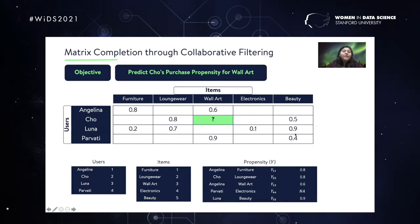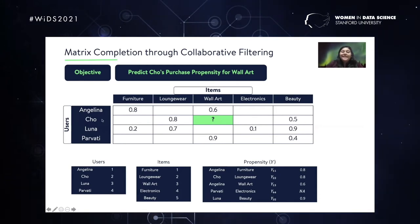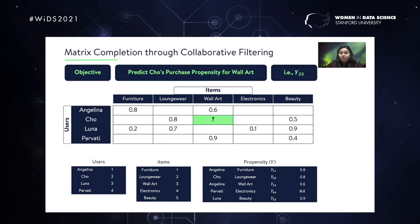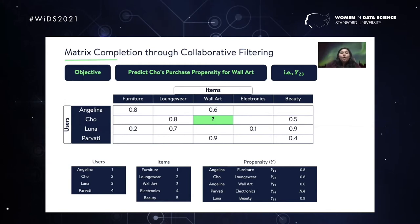We are trying to predict the propensity of the second user, Cho, to purchase the third item, WallArt. So in this case, it's going to be Y_23. This is what we are trying to predict. With me so far? Great.